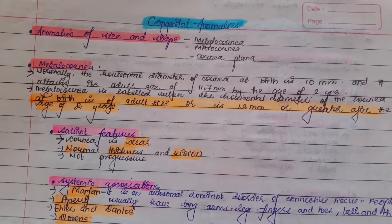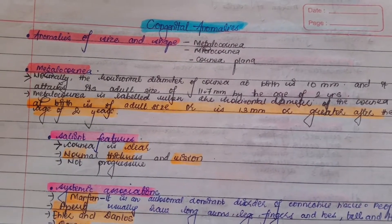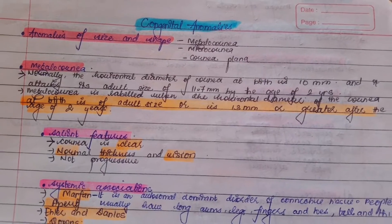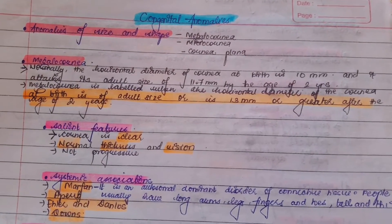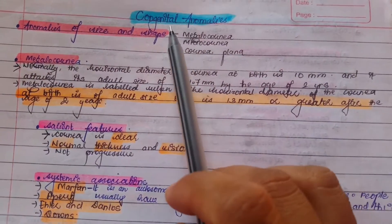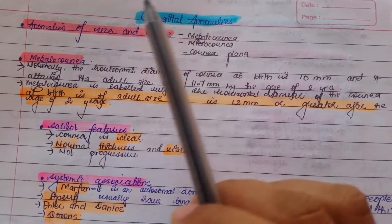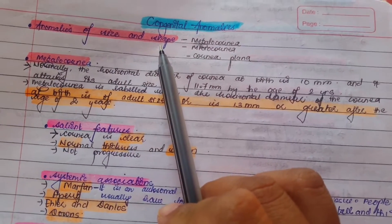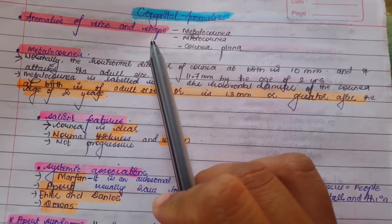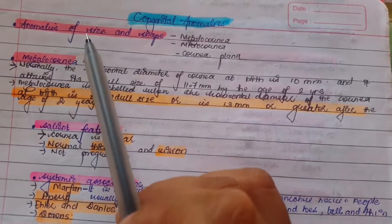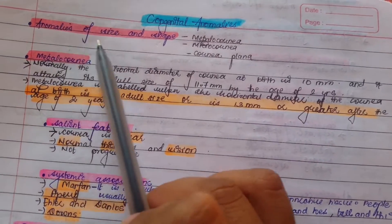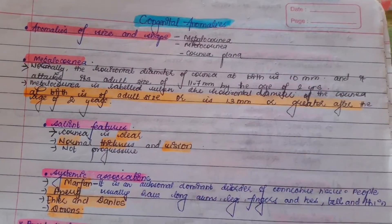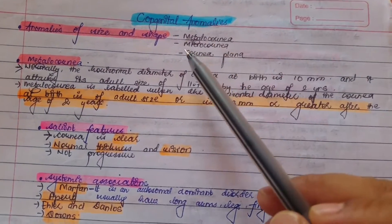Today we'll be talking about the congenital anomalies of the cornea. These are divided on the basis of either the size and shape of the cornea, or defects in corneal transparency. In this video we'll be mainly focusing on the anomalies of the size and shape of the cornea, which includes megalocornea, microcornea, and cornea plana.